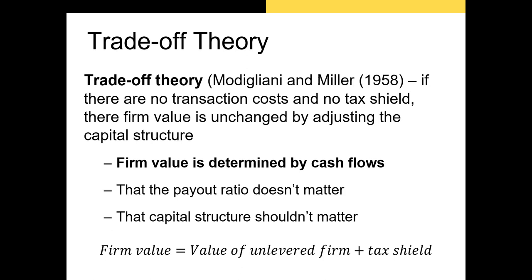Trade-off theory is one of the oldest theories in finance. It was developed as a result of a 1958 paper by Franco Modigliani and Merton Miller. Modigliani actually won the Nobel Prize in economics for this paper, and Miller won the Nobel Prize for a later paper. The original paper implies that if there were no taxes, no transaction costs, and no bankruptcy costs, then firm value would be unaffected by increasing leverage.